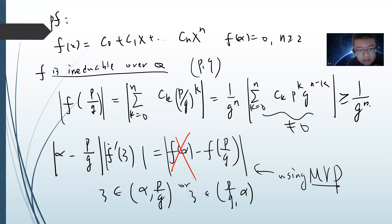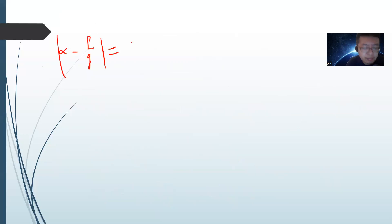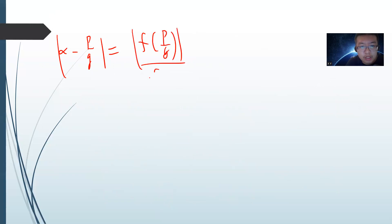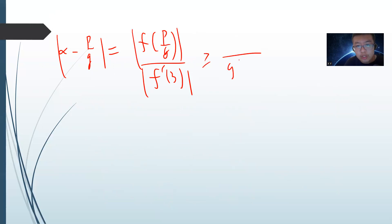So we have |α - p/q| = |f(p/q)| / |f'(E)|. And we know |f(p/q)| ≥ 1/q^n. So we need to bound the derivative f'(E).